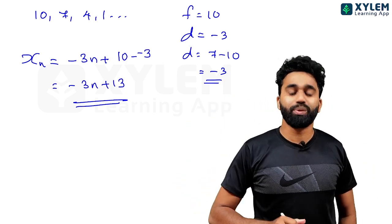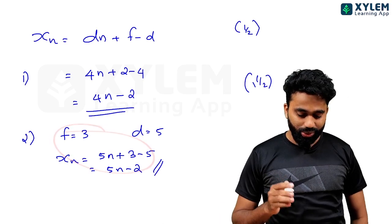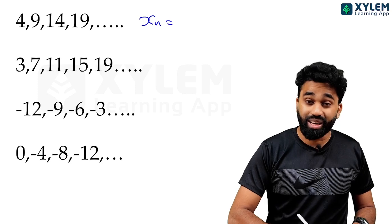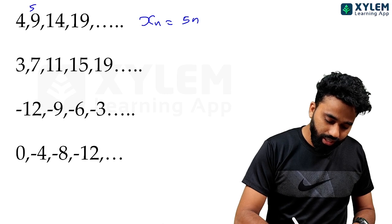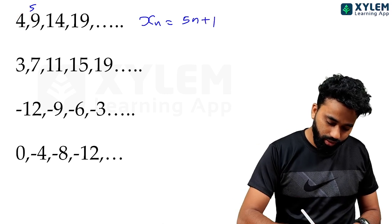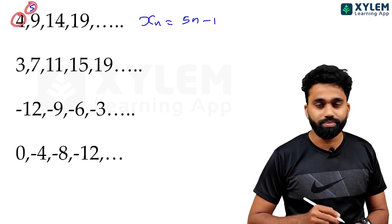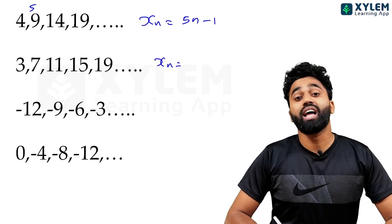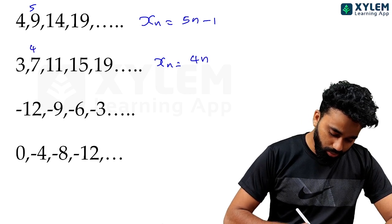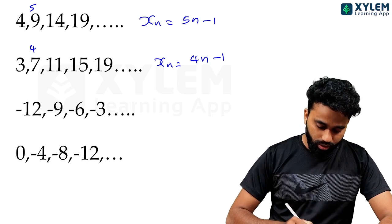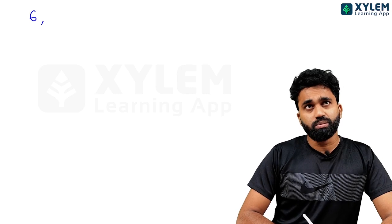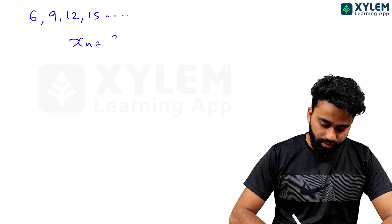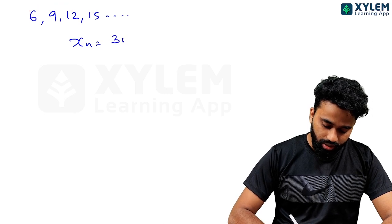You can write all the pieces. So what is xn? dn. 5n. 5n is equal to 4. 5n plus 1. f minus d. 4n. 5n. xn is equal to dn plus f minus d. With d equals 3 and the formula 3n plus f minus d.